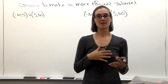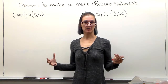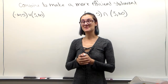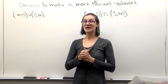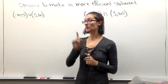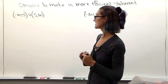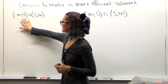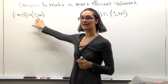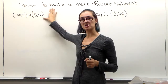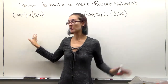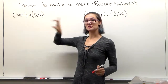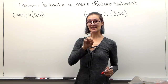If there's a hole or a gap in the graph, then you can't write it more efficiently. But if there's no holes or gaps, then it needs to be written in one statement. So what I gave you is negative infinity to 5, union with 3 to infinity. We're going to start with this one — these are two separate problems, and I want you to combine them into one statement.